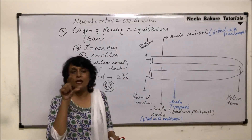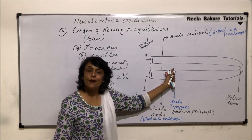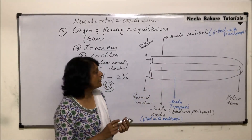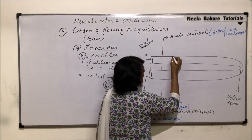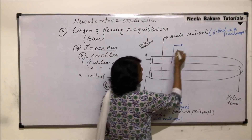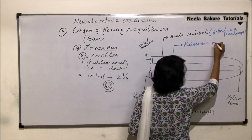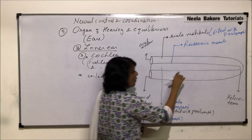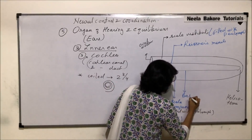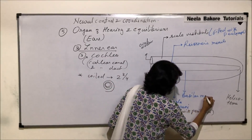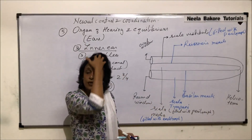The middle compartment is filled with endolymph. Now we will note the names of the membranes. The middle compartment has a membrane which forms its roof, known as Reissner's membrane. The floor of this compartment is made up of another membrane known as the basilar membrane. So there are two membranes — one making its roof and the other making its floor.